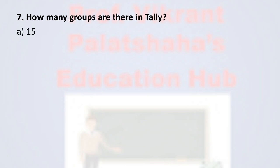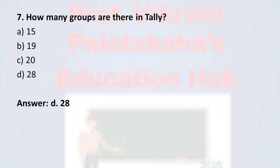Question number nine: How many groups are there in Tally? Option A: 15, Option B: 19, Option C: 20, Option D: 28. The correct option is Option D, 28. There are 28 groups in Tally, therefore the correct option is Option D, 28.